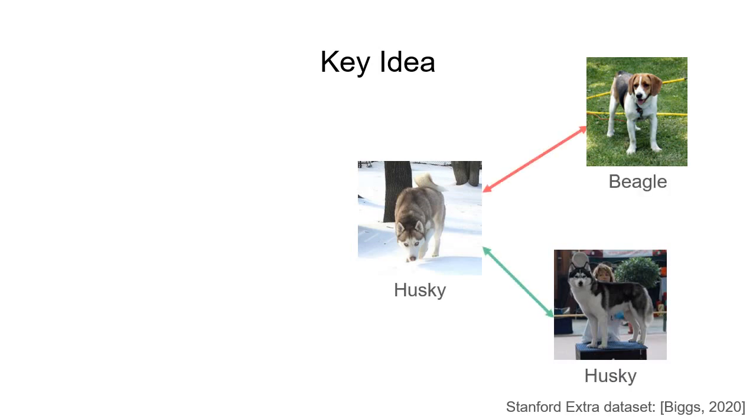Specifically, we exploit breed labels that come with the Stanford Extra Image dataset. We know that dogs of the same breed generally look more alike than dogs that belong to different breeds. This provides a form of supervision that a neural network can use to learn to regress 3D dog shapes from a single image.